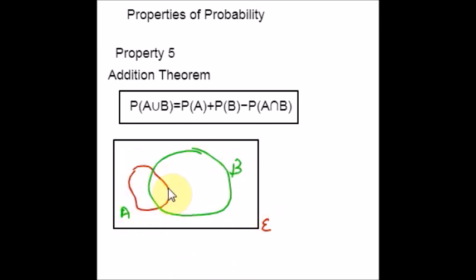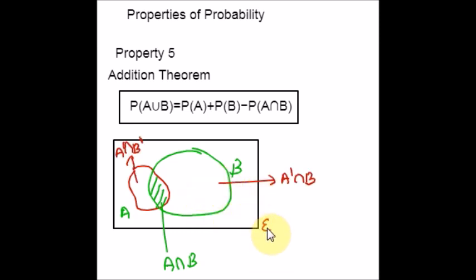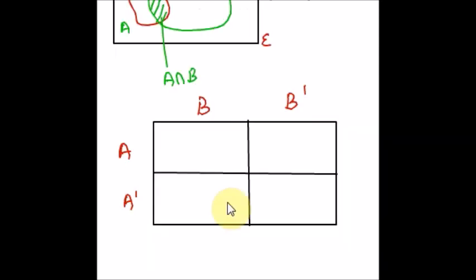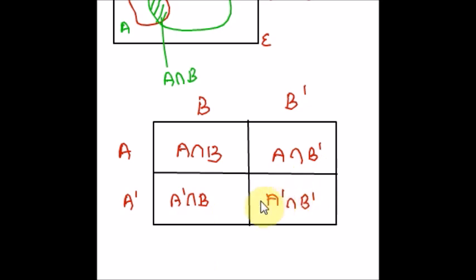Looking at the diagram for property 5, the common region for both A and B is A intersection B. The remaining region in A is A intersection B complement, and the remaining region in B is A complement intersection B. If we add P(A) and P(B), the intersection A ∩ B is counted twice. This gives us the table with regions: A∩B, A∩B', A'∩B, and A'∩B'.